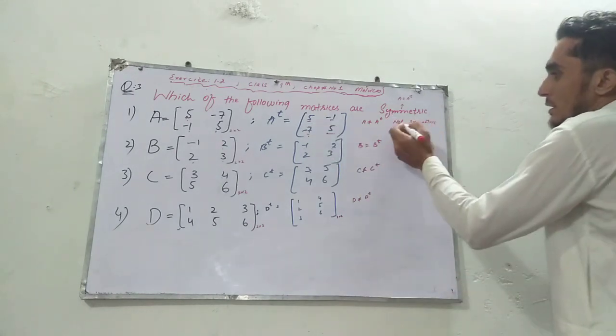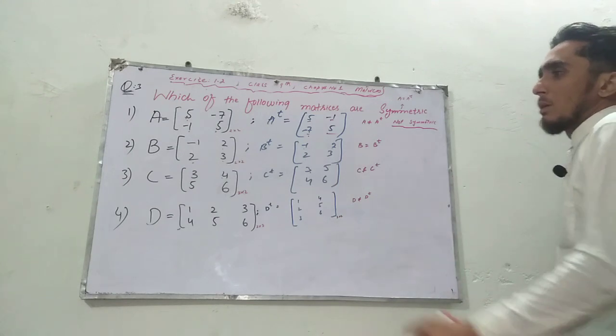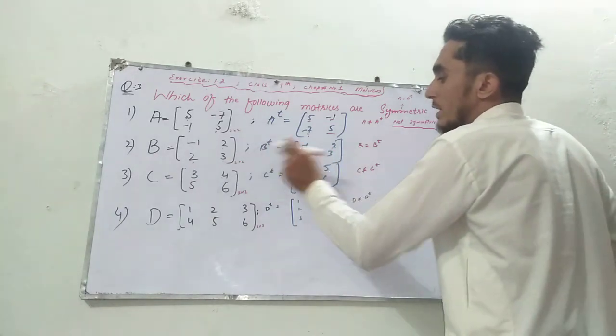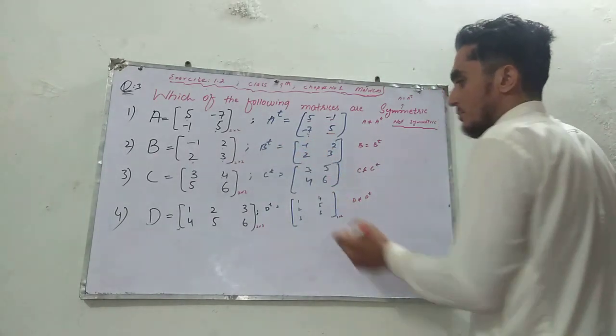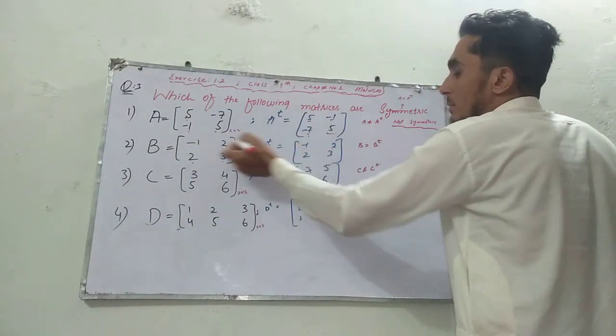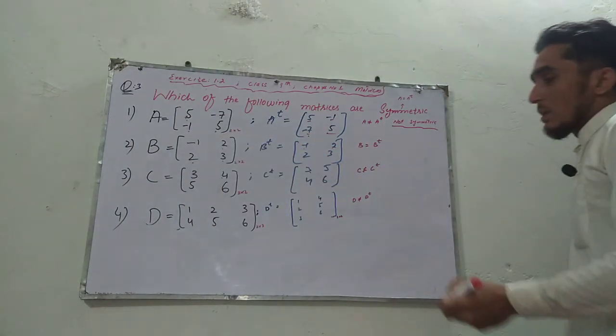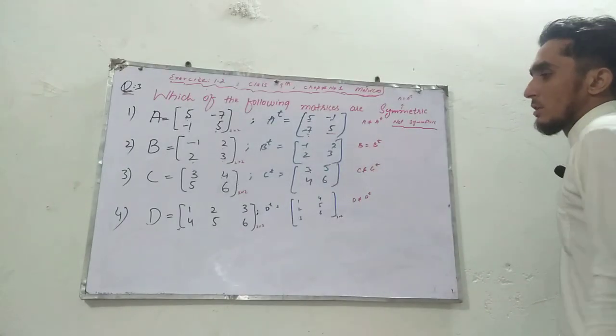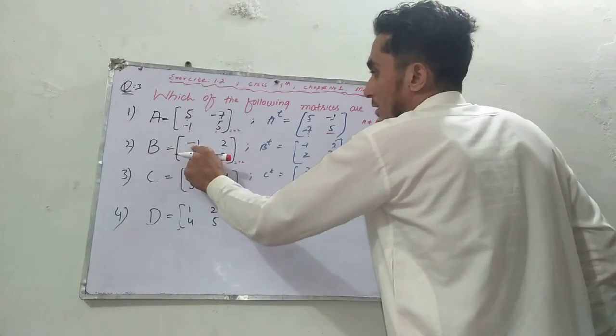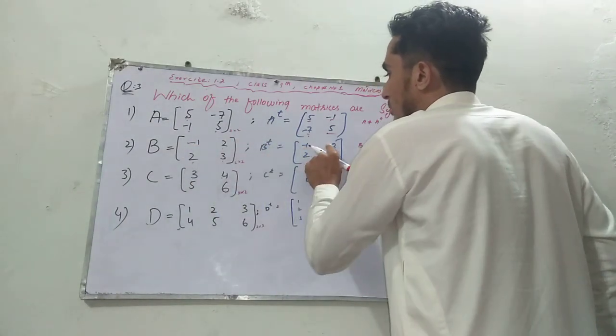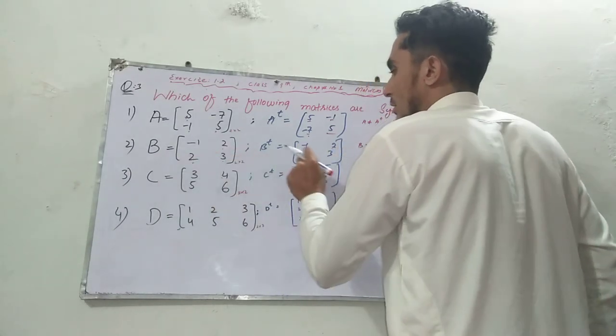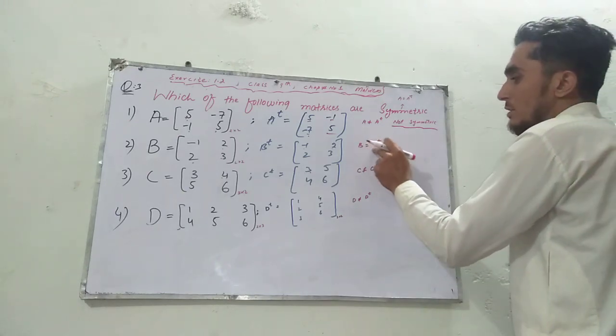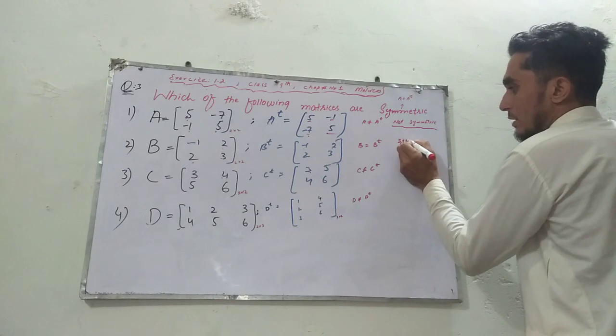The next question is B, which equals matrix [-1, 2; 2, 3]. We find the transpose. When we check the entries, -1 stays -1, 2 stays 2, 2 stays 2, and 3 stays 3. B equals B transpose, so this matrix is symmetric.